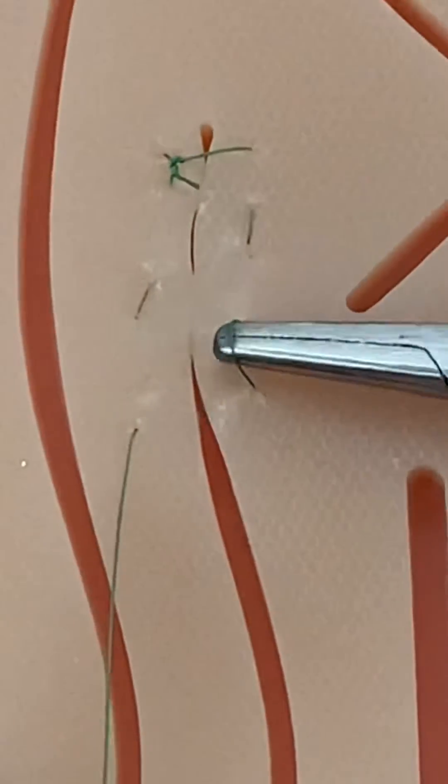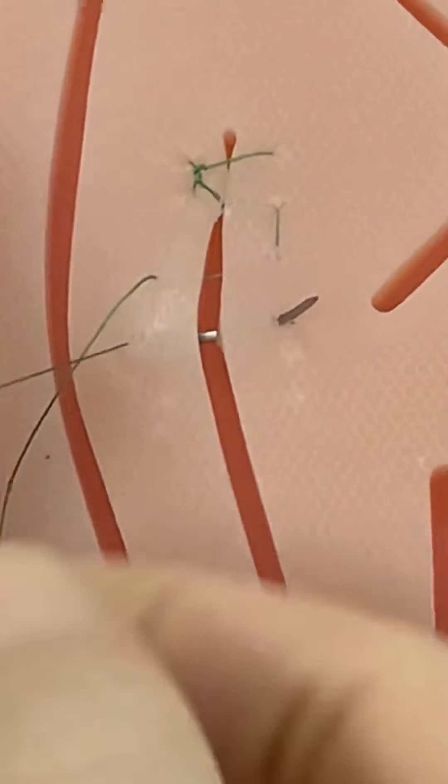If you make a mistake when suturing, sometimes you can pull the needle back through the flesh to fix it, but this may lead to the suture snapping.